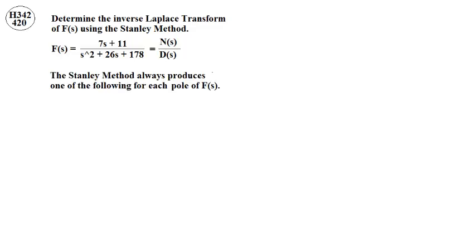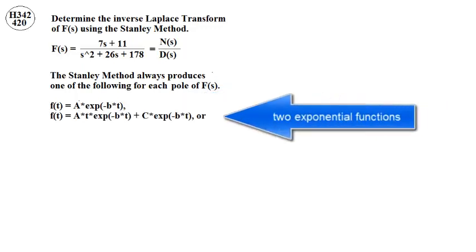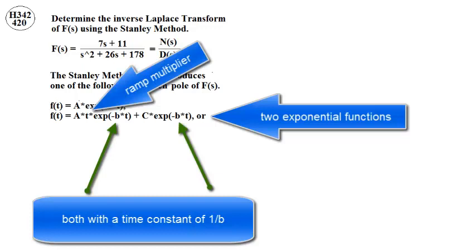The Stanley method always produces one of the following for each pole of the S-domain function. It could be an exponential function with a time constant of 1 over b. It could be two exponential functions, each one with a time constant of 1 over b, and one has a ramp multiplier.